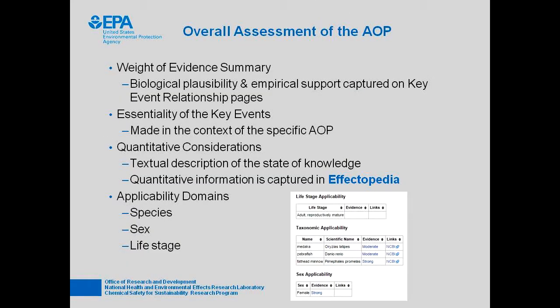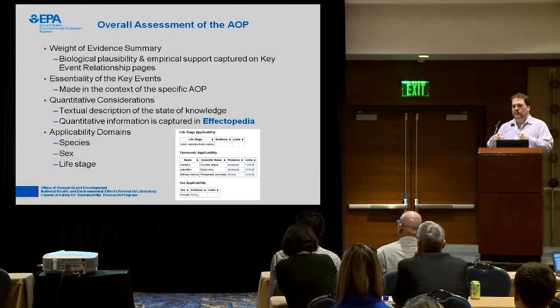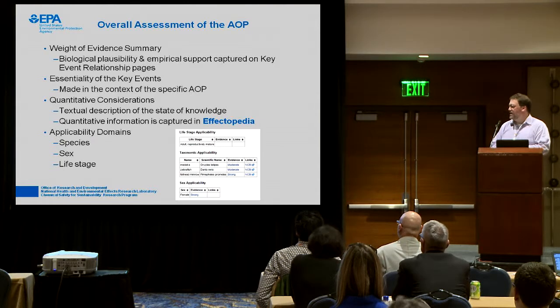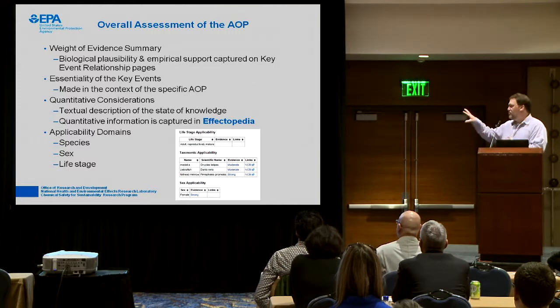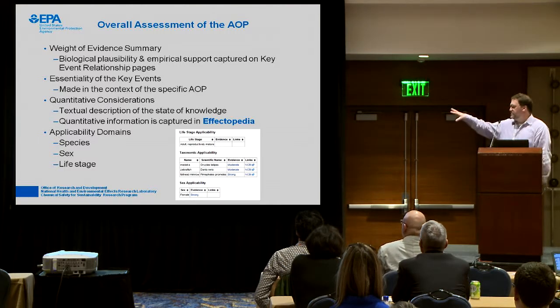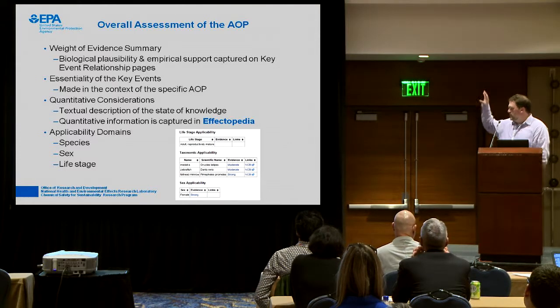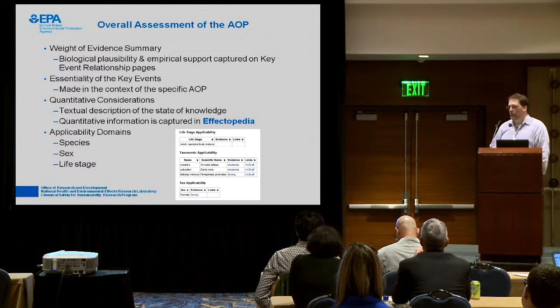At the bottom of the AOP page itself is an overall assessment of the AOP. You give a weight of evidence summary — most details are on the key event relationship pages, but you give a short summary to support the calls made in the table above. Essentiality of key events: since those calls are made in the context of a specific AOP, that information goes on the AOP page itself. The quantitative considerations section is a textual description of the state of knowledge; we don't capture quantitative information in the wiki — that goes in Effectopedia. We also have tables to define applicability domains for life stage, species, or sex, with text sections at the bottom where you can justify those calls.